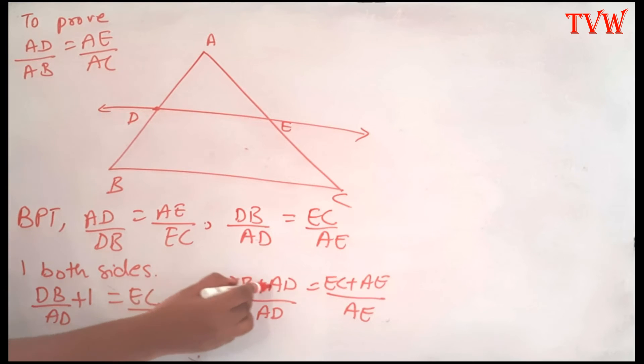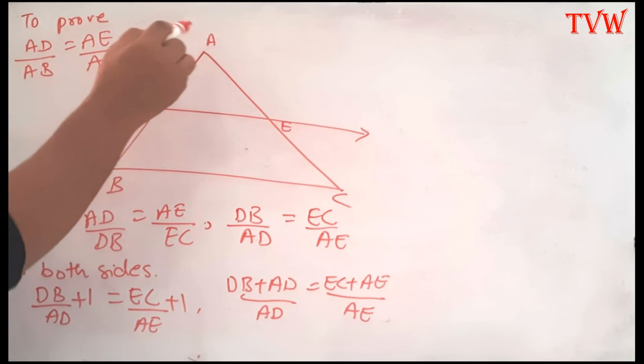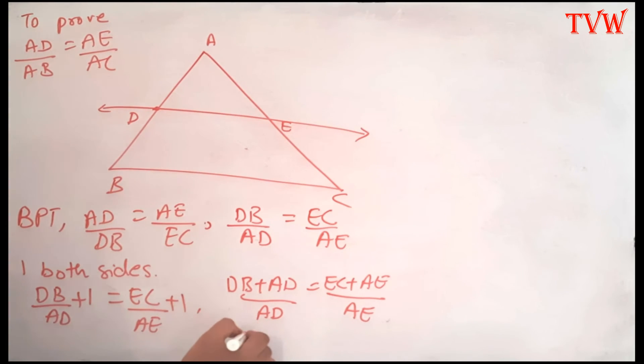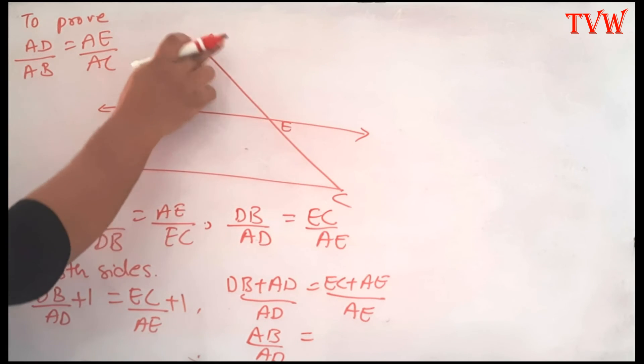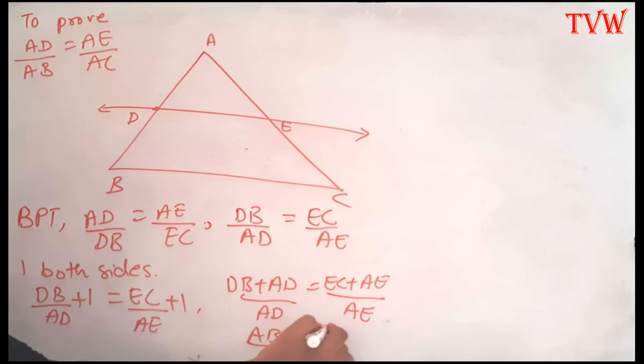Now, what is DB plus AD? DB plus AD is nothing but AB, the whole thing. So AB divided by AD is equal to, what is EC plus AE? That's nothing but AC, the whole thing. So AC divided by AE.